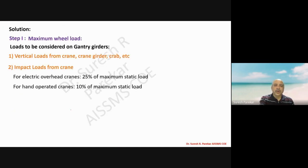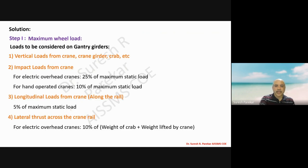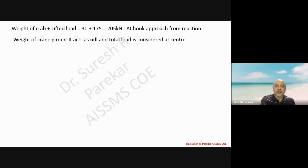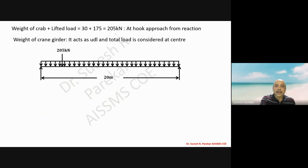Now for loads: weight of crab plus lifted load is 30 plus 175, which gives 205 kilonewton, acting at hook approach. Weight of crane girder acts as a UDL with total load given, acting at center. From this loading condition we will calculate wheel load. We take moment about the support to get the value of RA.